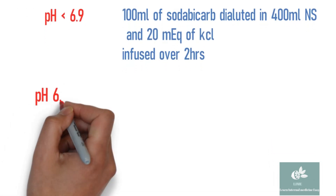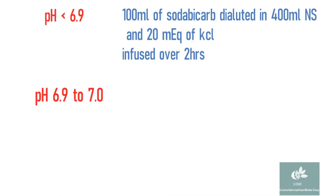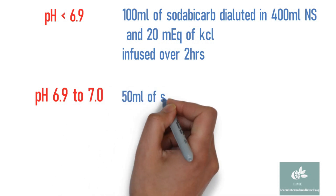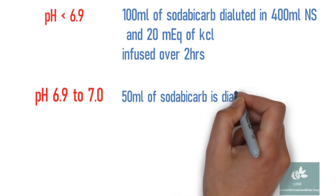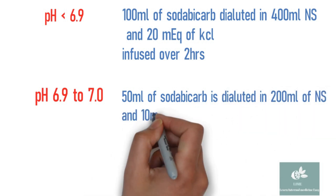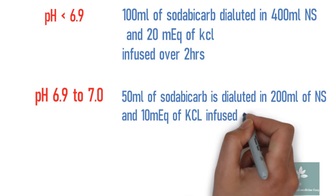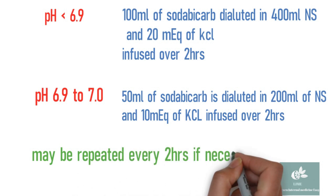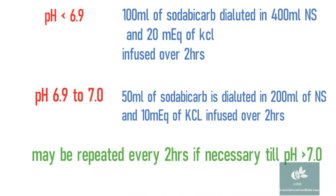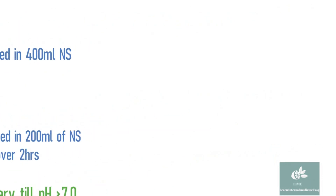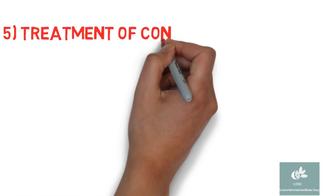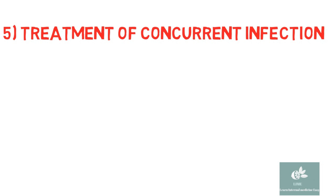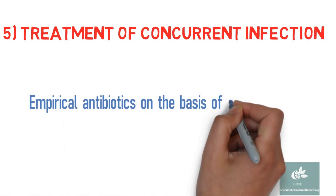If the pH is between 6.9 and 7: 5 ampoules (50 ml) of sodium bicarb diluted in 200 ml NS with 10 mEq of potassium added, infused over 2 hours. This can be repeated every 2 hours until the pH is more than 7. As the most common precipitating factor is infection, empirical antibiotics should be started on the basis of clinical suspicion as early as possible.